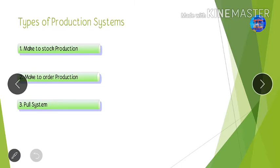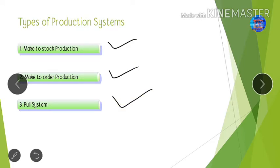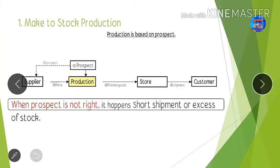Before going further about Kanban, let me tell you about the types of production systems, because to learn about the pull system, we first need to understand the other production systems. The first one is make to stock production, the second is make to order production, and the third is the pull system.